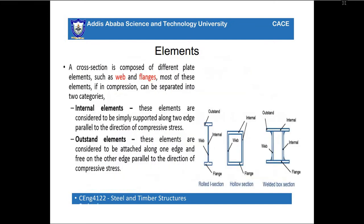When a cross section is composed of different plate elements, these elements can be separated into two categories: webs and flanges. Internal elements are considered to be simply supported along two edges — these are the webs. Outstand elements are considered to be attached along one edge and free on the other — these are the flanges.